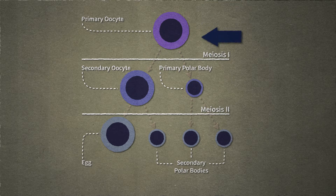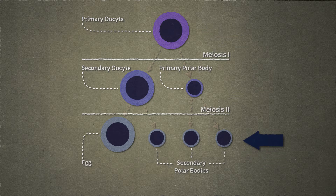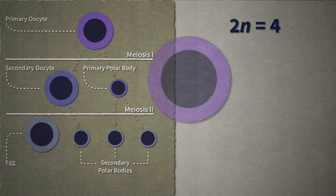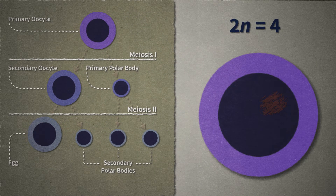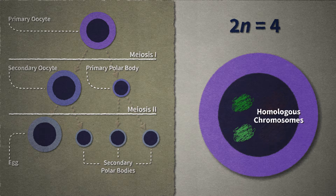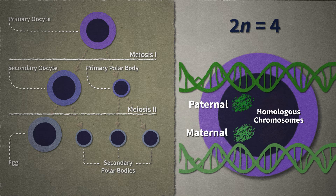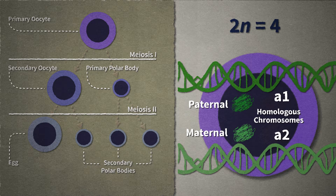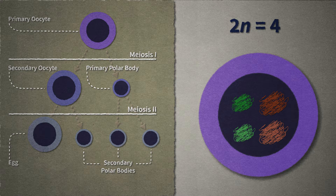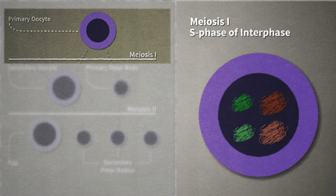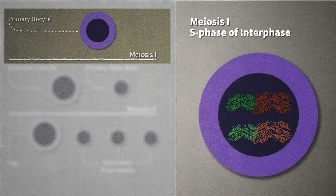In normal oogenesis, the diploid primary oocyte divides by meiosis to produce haploid daughter cells. Let's follow this process for a cell with 2n equals 4 chromosomes. Remember that each homologous pair of chromosomes consists of one paternal and one maternal chromosome. These chromosomes carry the same genes in the same sequence, but may carry different alleles. Each chromosome has been replicated in the S phase of interphase and now consists of two identical sister chromatids joined at the centromere.